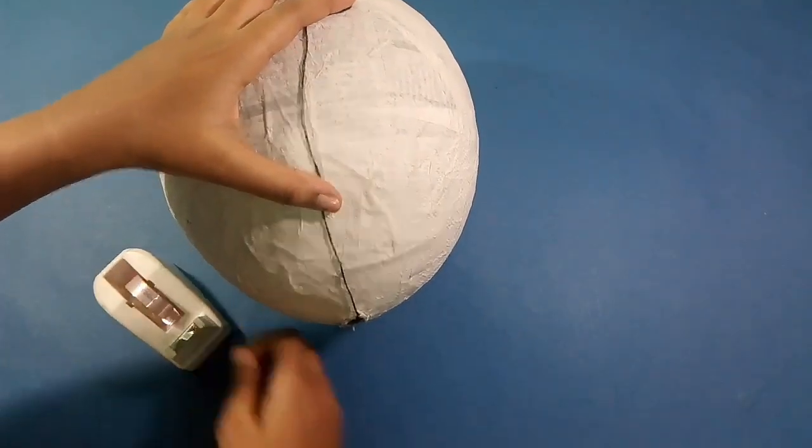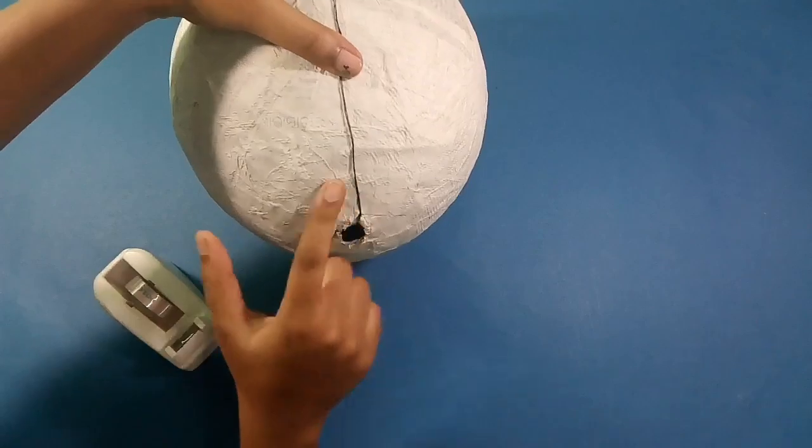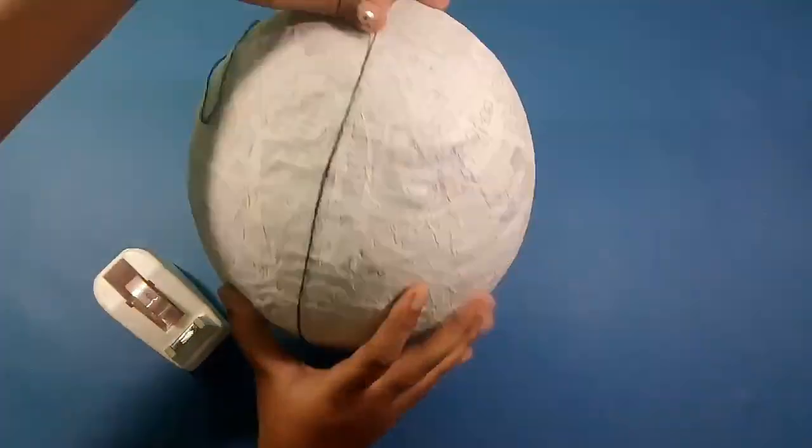Here I'm using thread to mark and cut the shell into equal halves. Use multiple pushes.